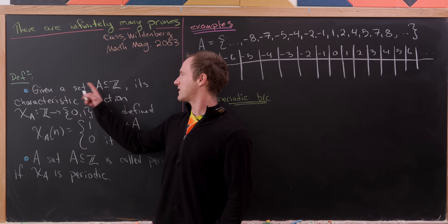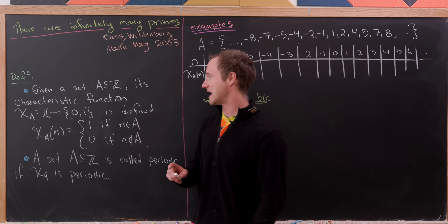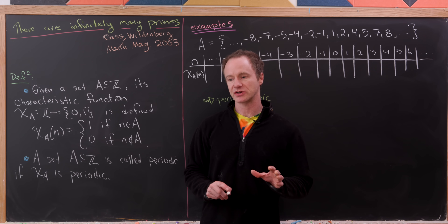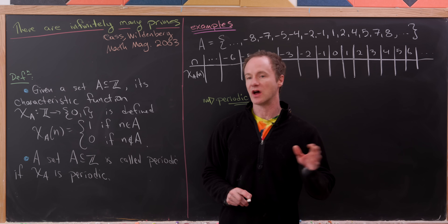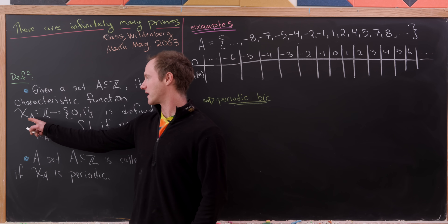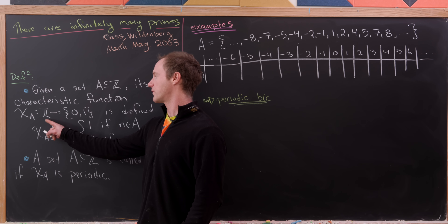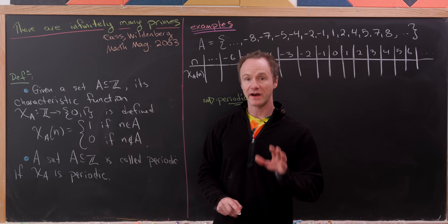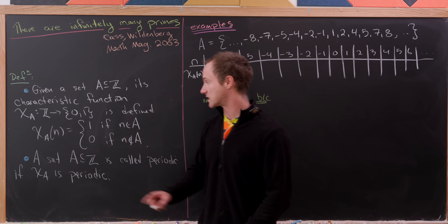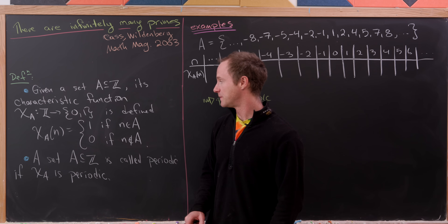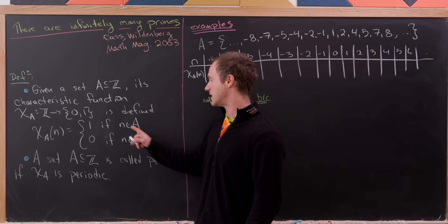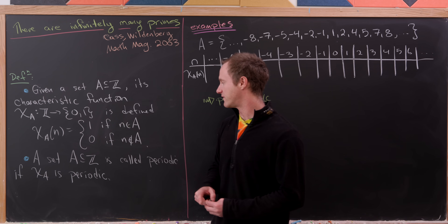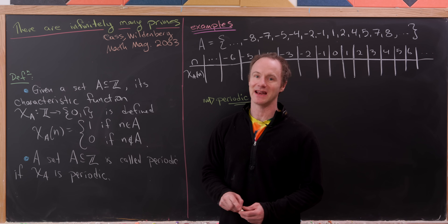Let's say we've got a set of integers A. What we want to do first is define something called the characteristic function of that set. We'll call it chi sub A, and it'll go from the integers to the set containing 0 and 1. It takes in an integer n and gives us 1 if n is an element of A, and 0 if n is not an element of A.